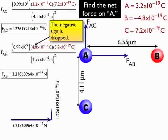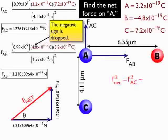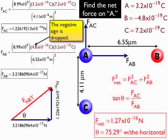Now I use trig and geometry to figure out the final answer. Pythagorean's theorem to find the magnitude, and a little bit of trig to find the angle. And I get 1.27 times 10 to the negative 16 newtons, and 75.29 degrees with the horizontal.